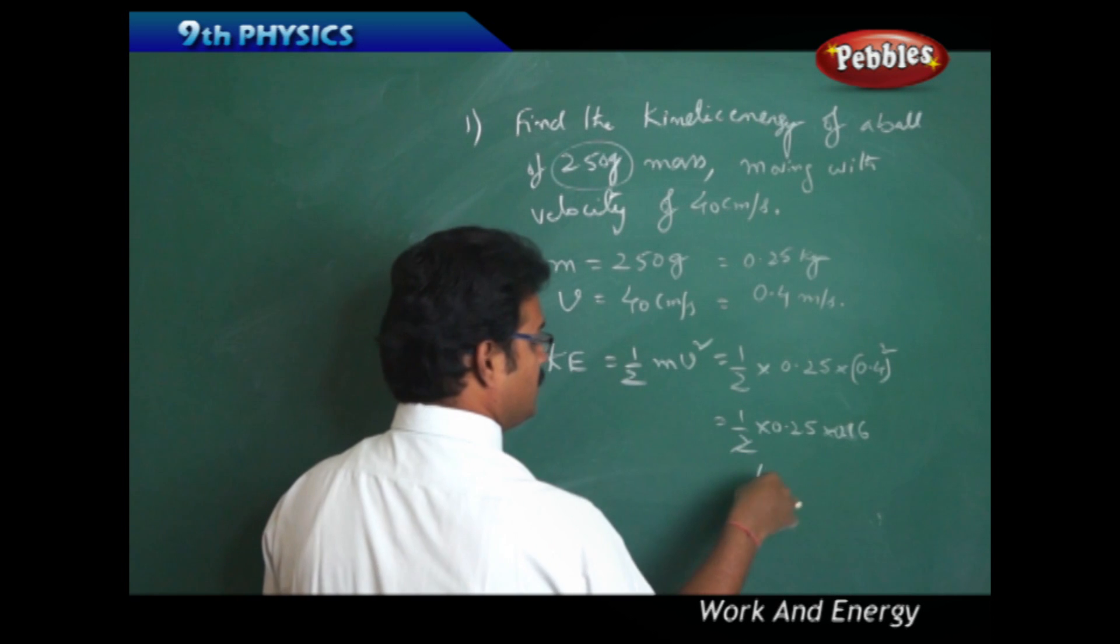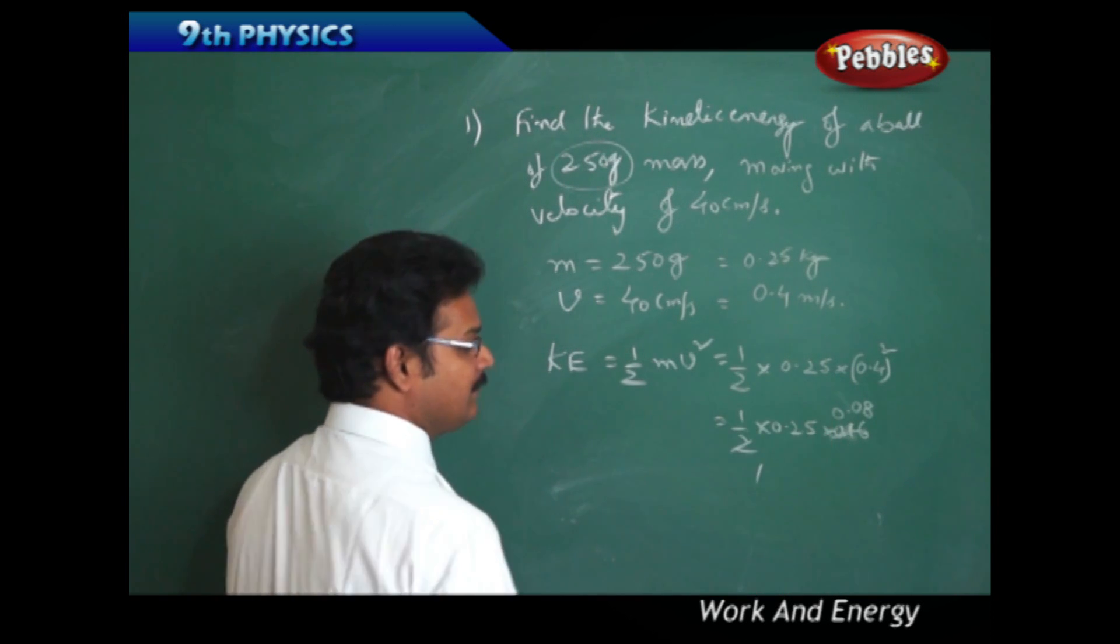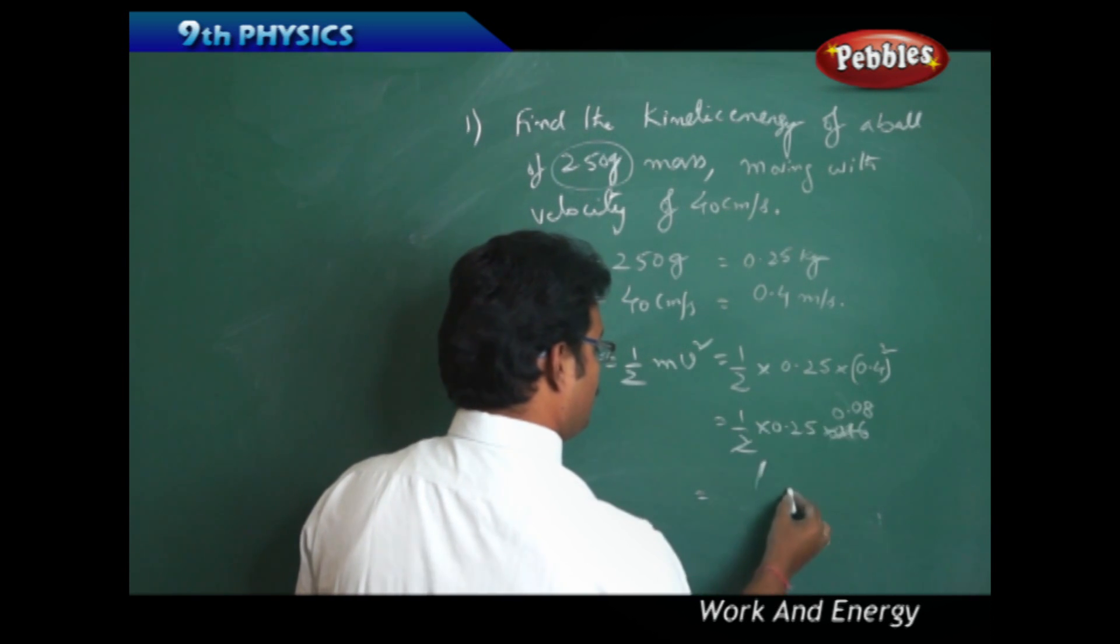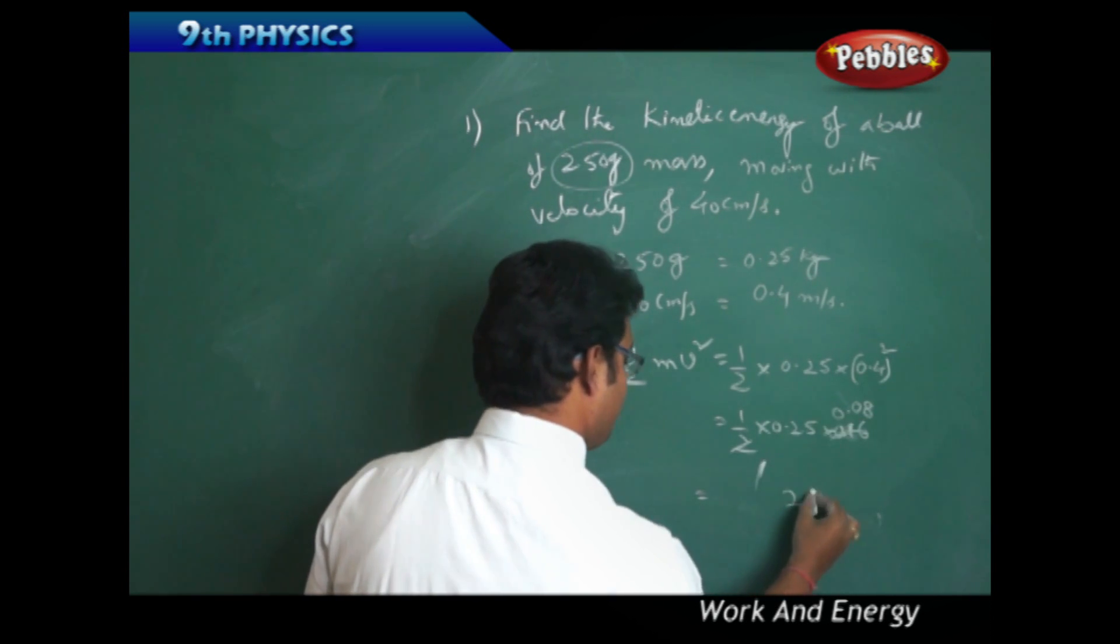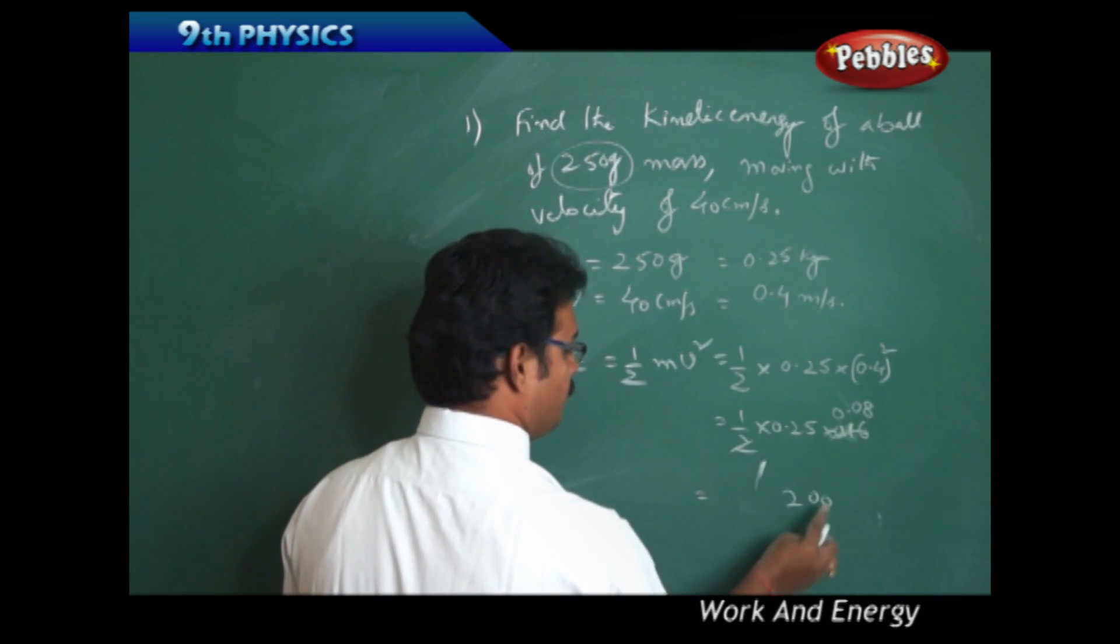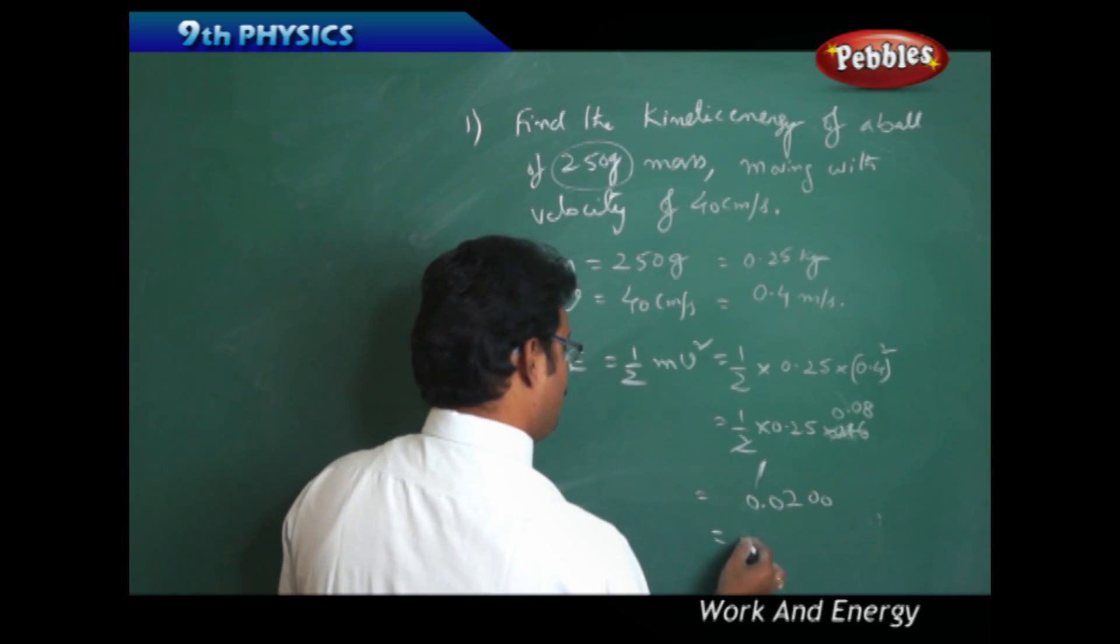2 into 25 into 16... so 25 times 8. 25 times 8 is 200, and how many decimals? 1, 2, 3, 4. So 1, 2, 3, 4. So the answer is 0.02 joules.